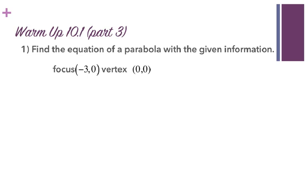Alright, let's go over it. This says find the equation of a parabola with the given information: a focus of negative 3, 0, and a vertex of 0, 0. If I graph the information given, the vertex is at (0, 0) and the focus is at (-3, 0).